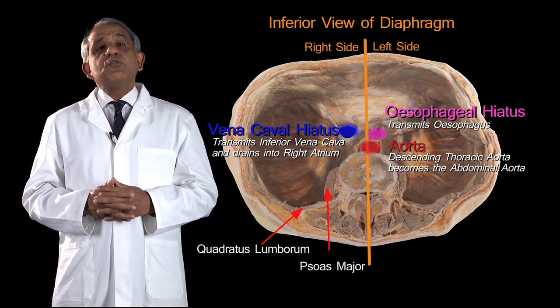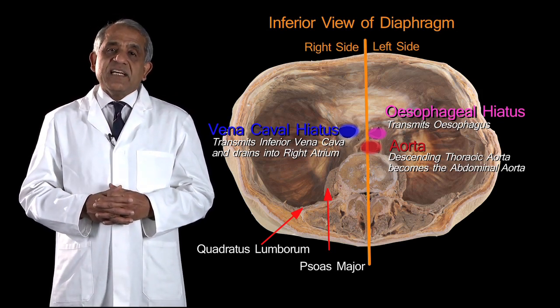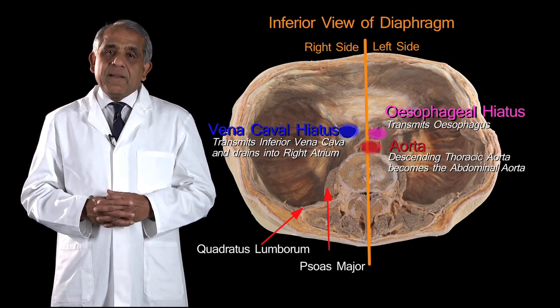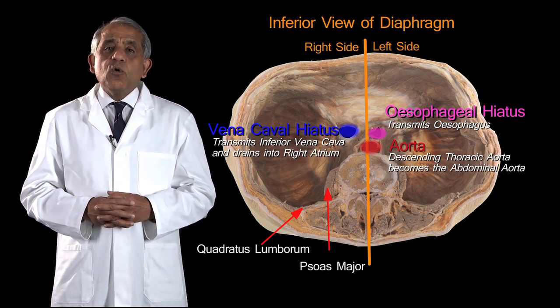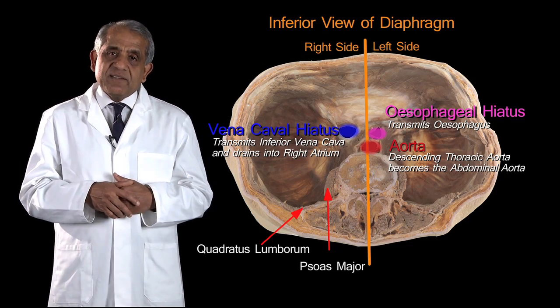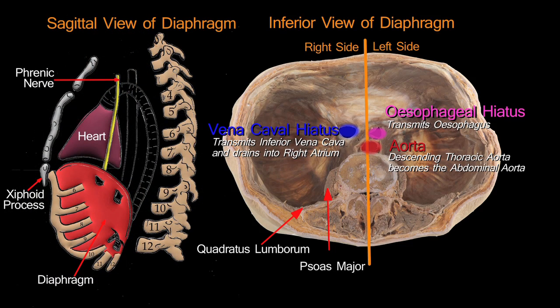So these are the three major openings in the diaphragm, and they are not all at the same horizontal level. The aortic opening is approximately at the level of the twelfth thoracic vertebral body, or the upper border of the first lumbar vertebral body — so it is the lowest of the three openings.